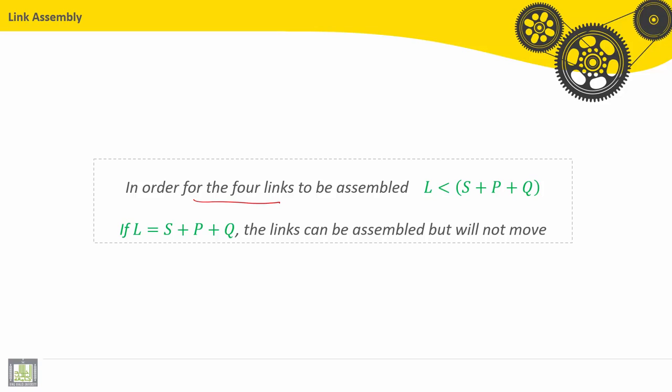In order for the four links to be assembled, L should be less than S plus P plus Q. If L is exactly equal to S plus P plus Q, the links can be assembled but will not move.